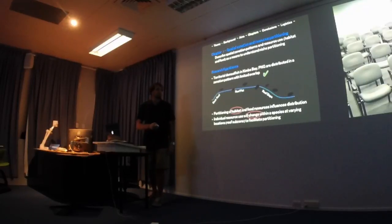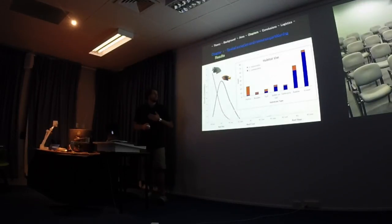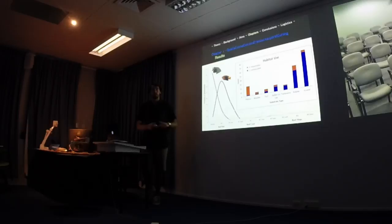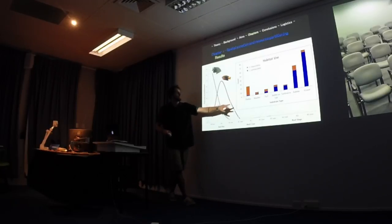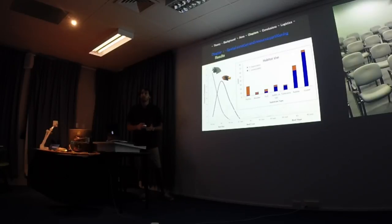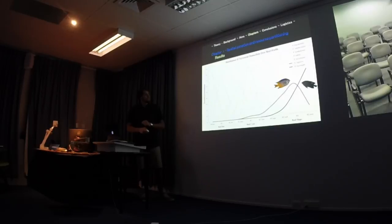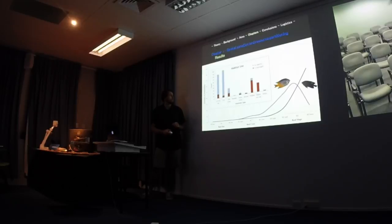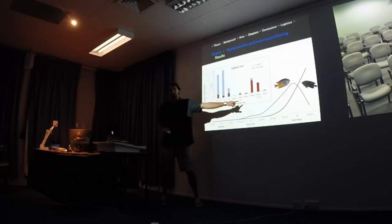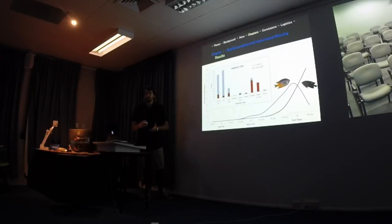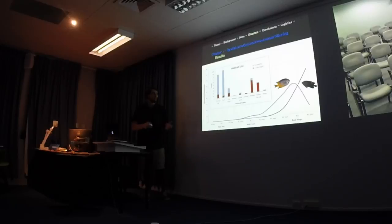Looking at habitat use for the reef flat species, with count on the y-axis and substrate type on the x-axis: Trichonotus actively selects Padina algae, while unimaculatus selects rubble and gravel. They are partitioning these reef resources. On the reef slope, Neopomacentrus is primarily on turf and Pomacentrus burowi is primarily on rubble. Since rubble and turf are in equal abundance on the reef slope, these individuals are actually partitioning resources, suggesting this may be why they are where they are.